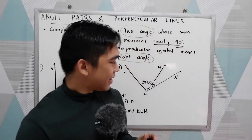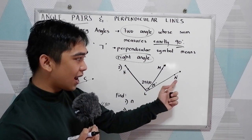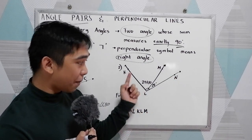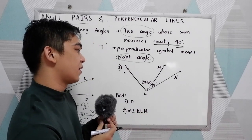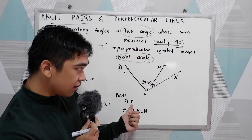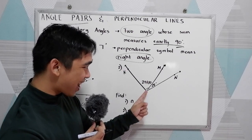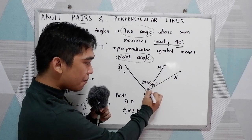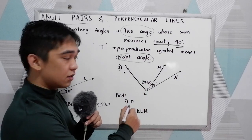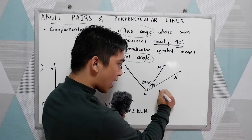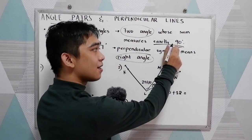Next example. We have this illustration with angle KLM. The measure of angle KLM is 90 degrees because we have a perpendicular line here. We're going to find N and the measure of angle KLM. The measure of angle MLN is given as 28 degrees. We know that 2N plus 10 plus 28 equals 90.